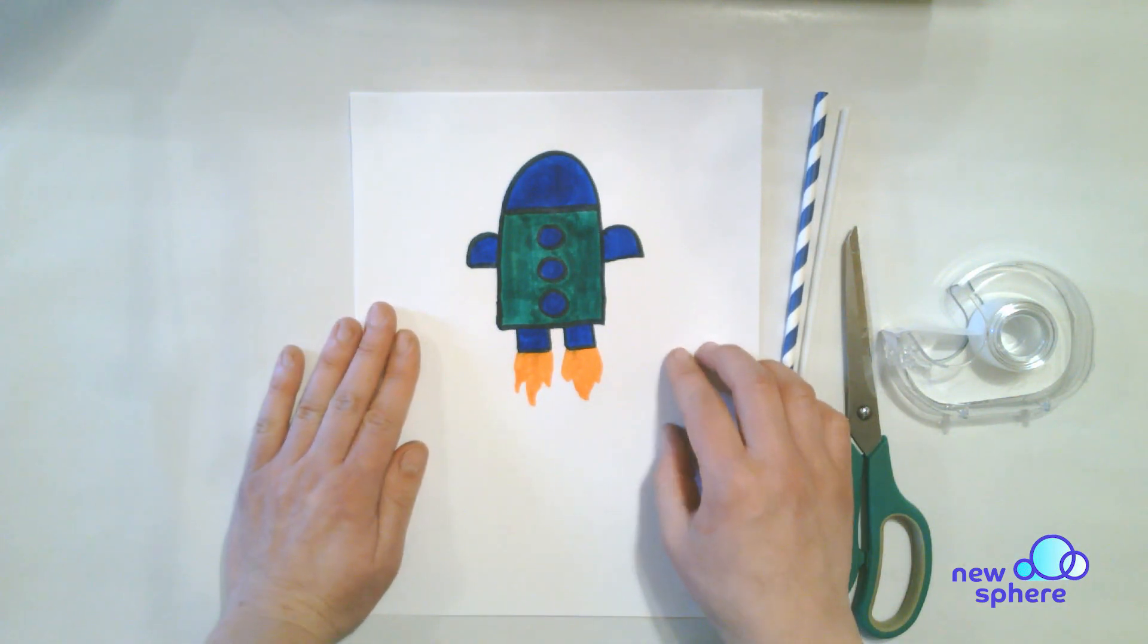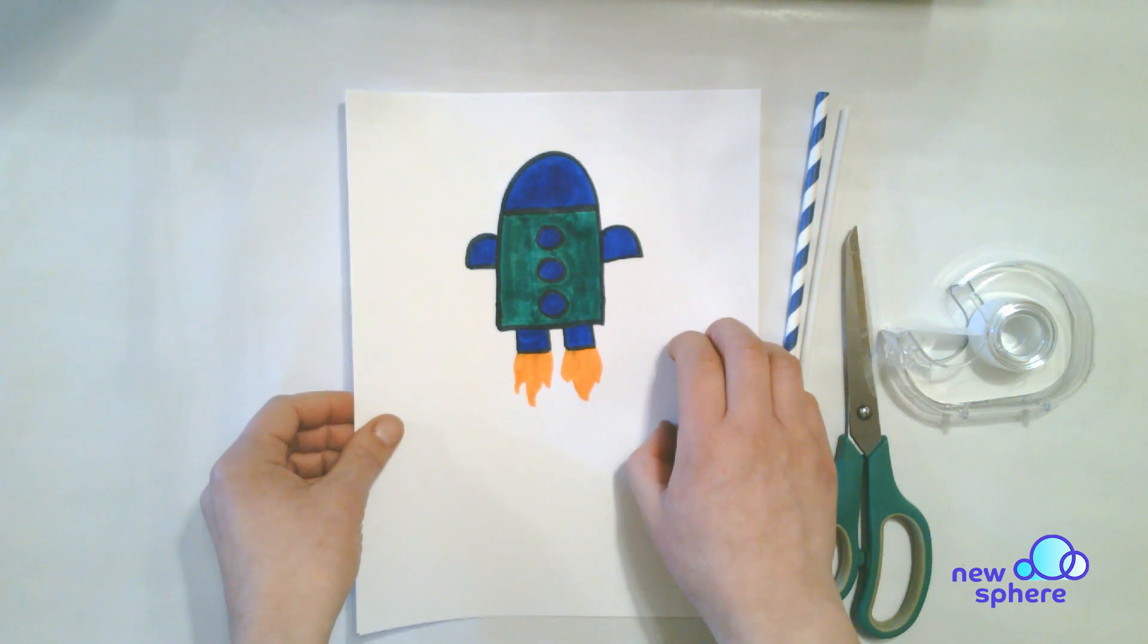When you are done drawing your rocket and coloring it in, then cut it out.